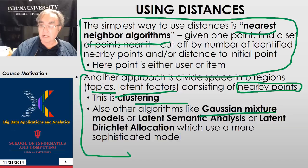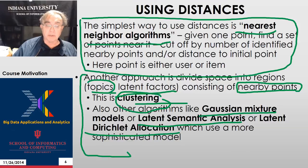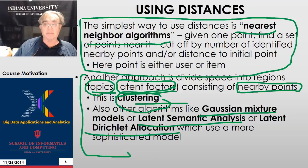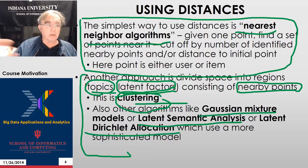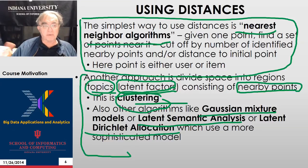There are other related algorithms — Gaussian mixture models, latent semantic analysis, latent Dirichlet allocation — which use very sophisticated models, more sophisticated than clustering, to determine topics or latent factors. These are effectively ways of representing spaces and dividing them into regions where the points are near each other. In the case of Google News, you want all items relevant to a current news item about Ebola, the president, or the election. It's not just a simple mapping to words; it's a complicated set of criteria obtained by training and relatively sophisticated analyses. We will not go into these models in this class, but a more sophisticated machine learning course would.